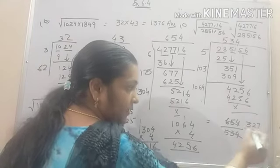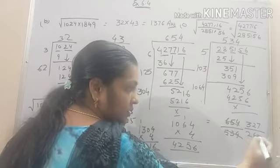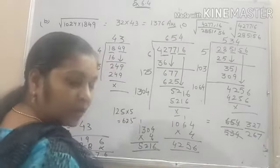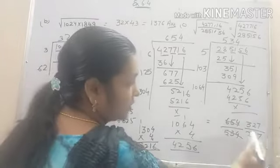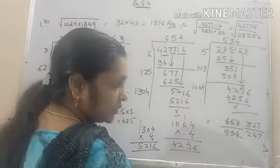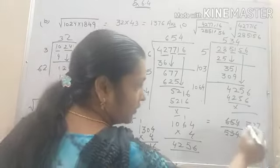Cancel it by 2. 327. And it will come 267. Okay. Now check whether it is possible to divide it by 3. Yes. It is. Isn't it so? So divide it by 3.